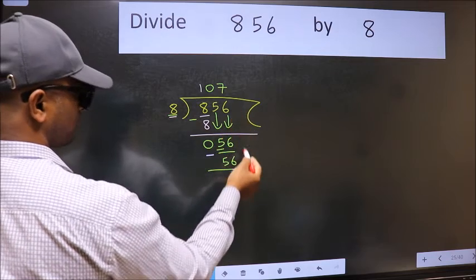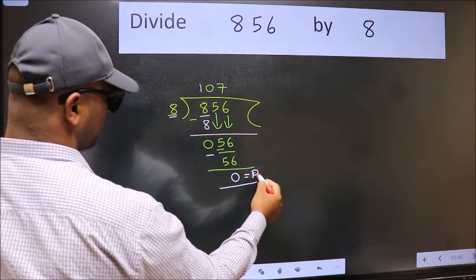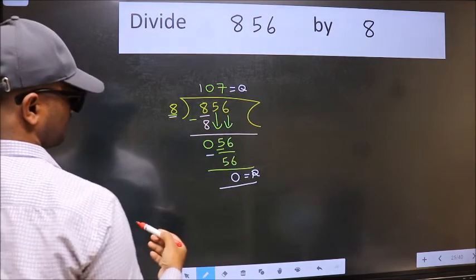No more numbers to bring it down. So we stop here. This is our remainder and this is our quotient. So we get 0 here, and this is our quotient.